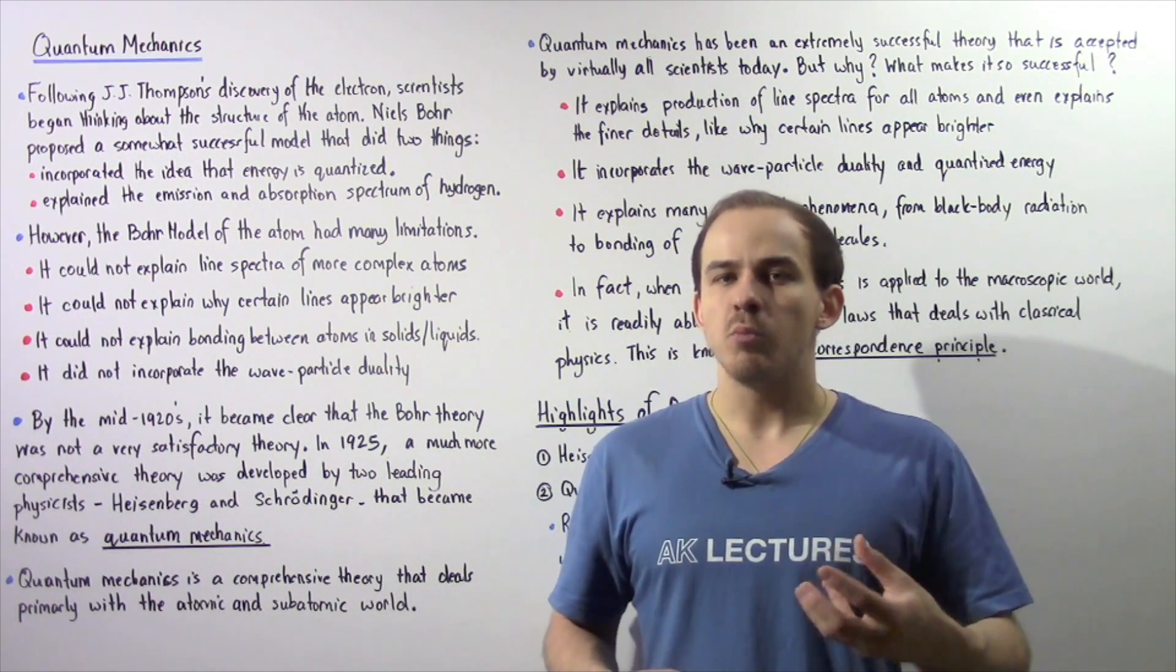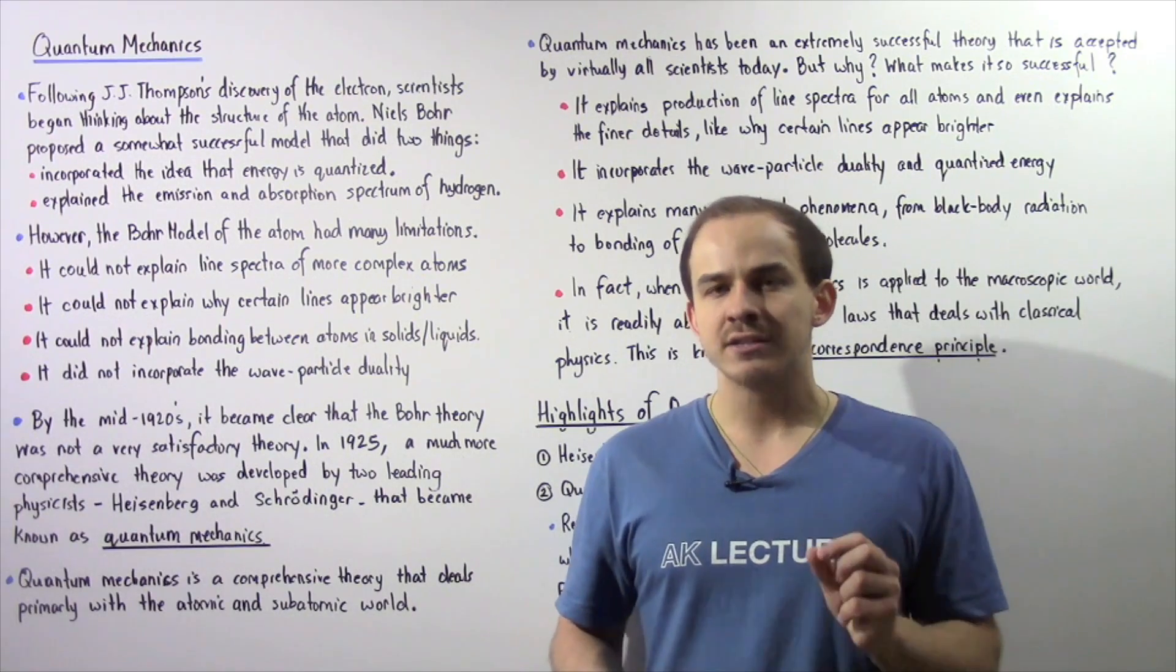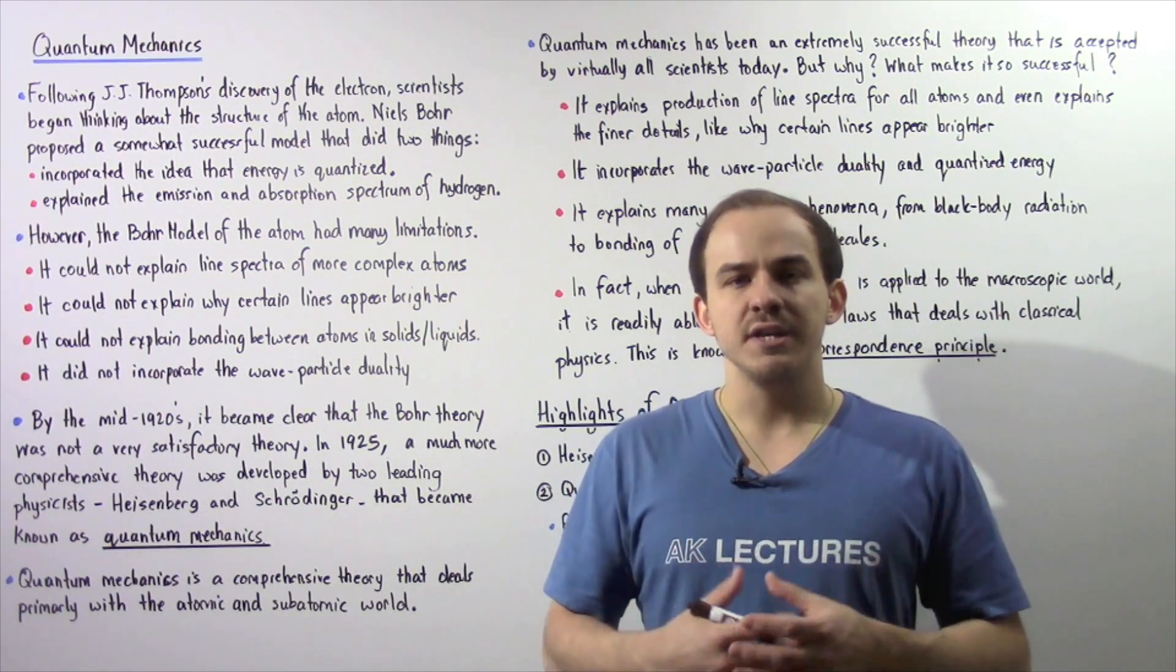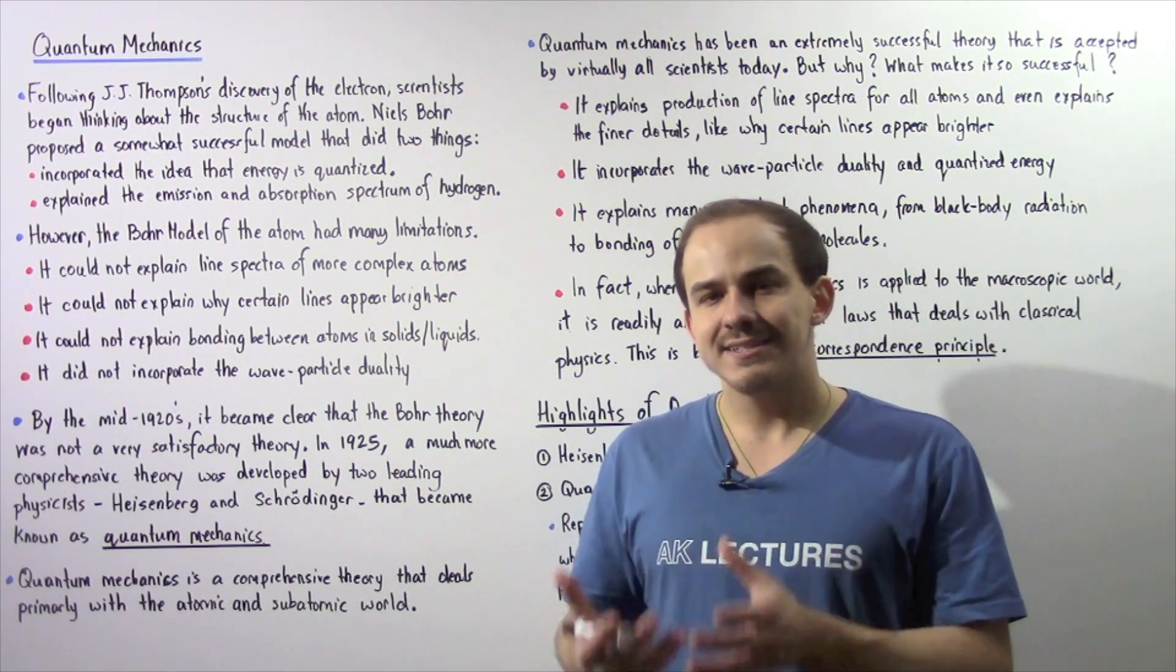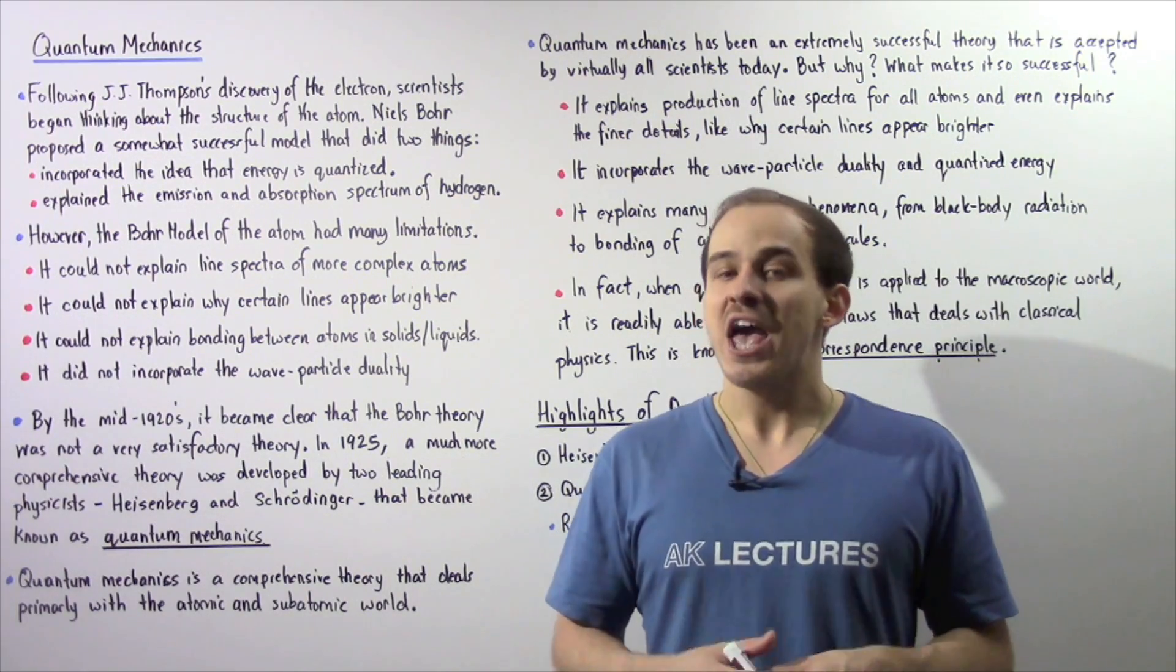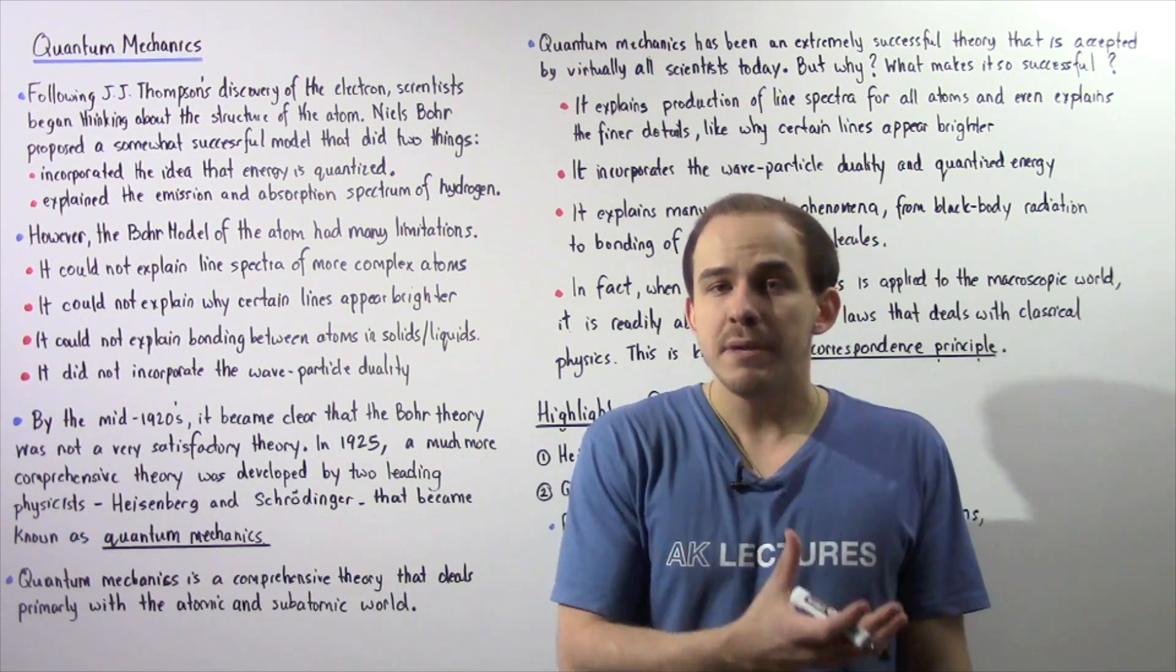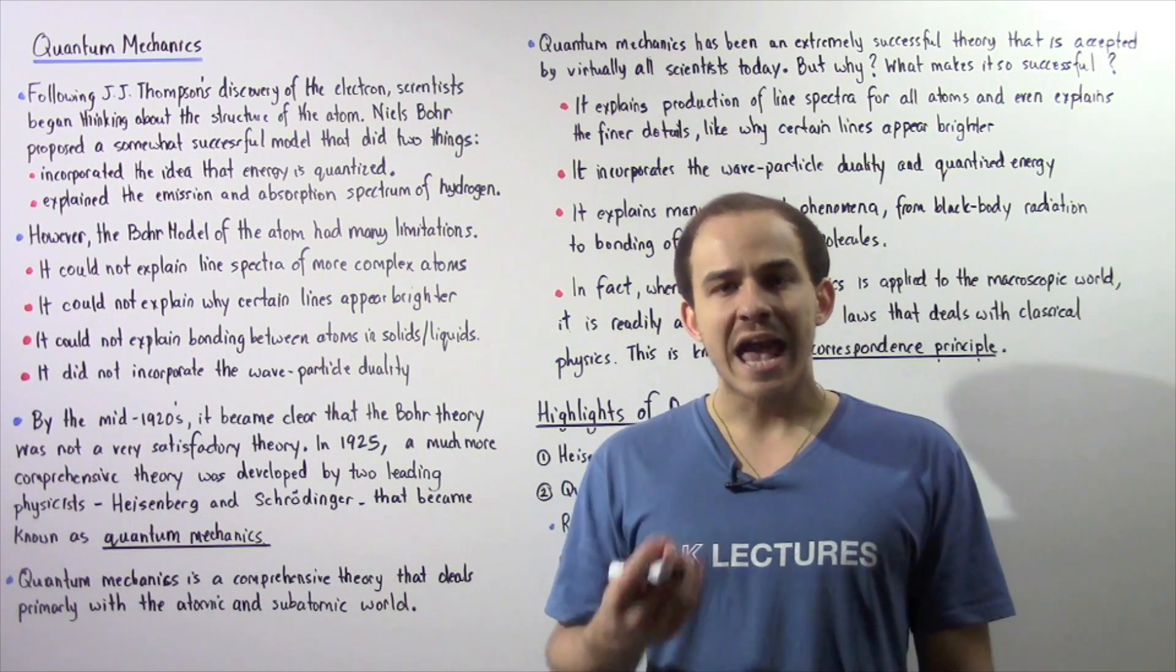The reason this was a somewhat successful model was because it did two things correctly. Firstly, it incorporated the quantum theory of energy, the fact that energy is quantized and exists in discrete units known as quanta or photons. And secondly, it explained the production of the emission and absorption line spectrum of the hydrogen atom.